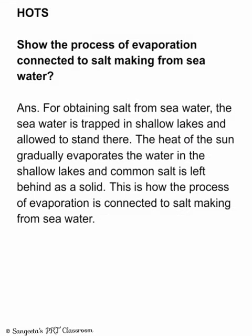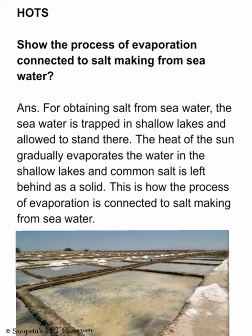HOTS — Show the process of evaporation connected to salt making from sea water. For obtaining salt from sea water, sea water is trapped in shallow lakes and allowed to stand. The heat of the sun gradually evaporates the water in the shallow lakes and common salt is left behind as a solid. This is how the process of evaporation is connected to salt making from sea water.